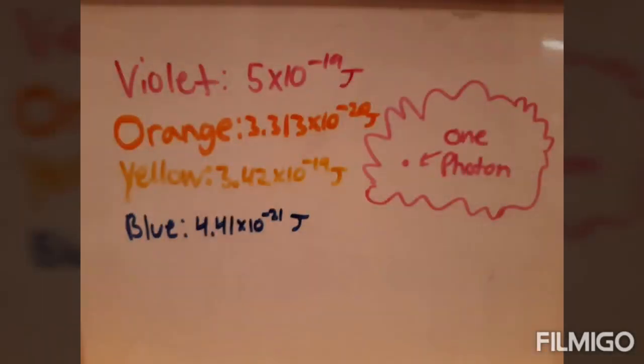Now let's do this for orange, blue, and yellow. Orange's energy would be 3.313 times 10 to the negative 20th power. Yellow's would be 3.42 times 10 to the negative 19th power. And blue's would be 4.41 times 10 to the negative 21st power. As you can see, blue has a higher energy than yellow and orange.